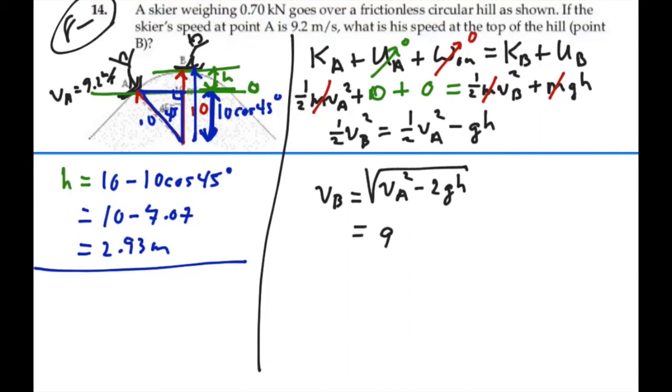That's going to be equal to 9.2 squared minus 2 times 9.8 times the height 2.93 meters all this square root.